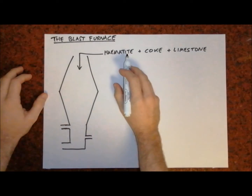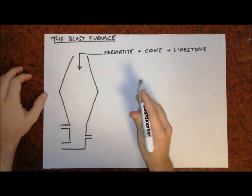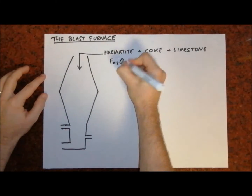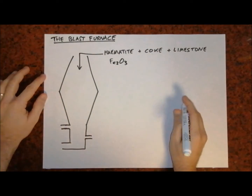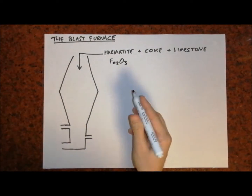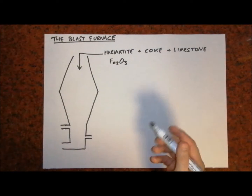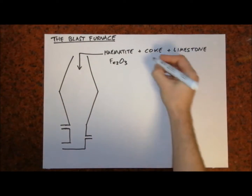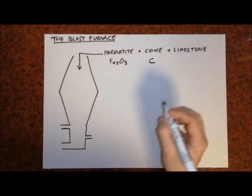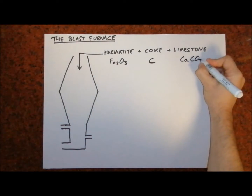The hematite is an iron ore, which is a substance that contains enough iron to make it worth extracting. In this case it is iron three oxide — a deep brown-red color, the same compound found on the surface of Mars. Coke is an impure form of carbon, and limestone contains calcium carbonate, which we will come to later.